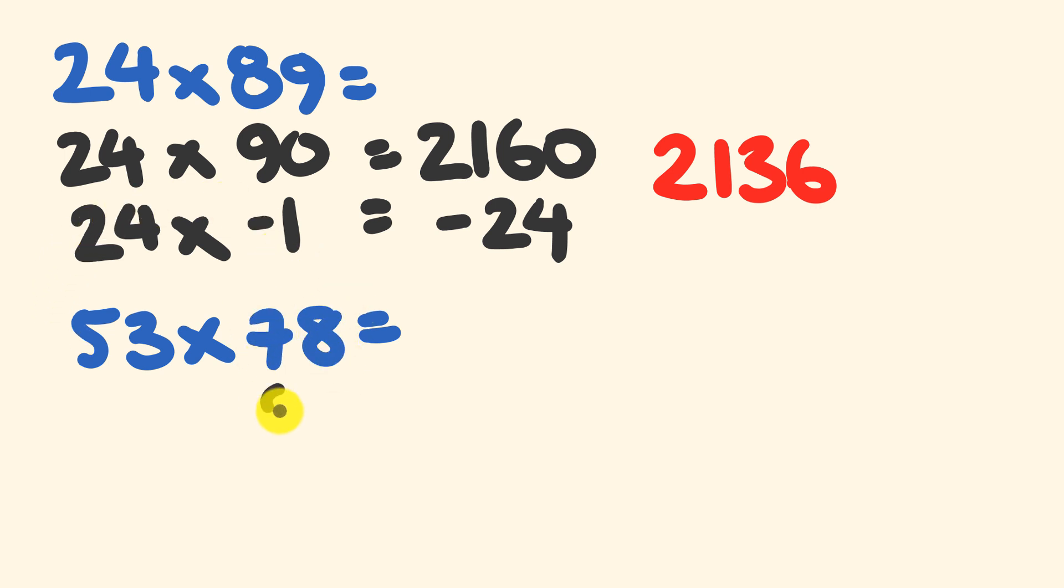So the 78 is close to 80. It's equal to 80 minus 2. And both of these are going to be multiplying by 53. So let's just go through and do that.